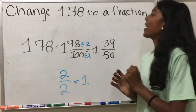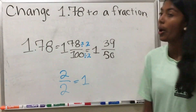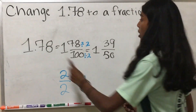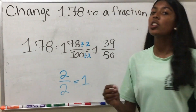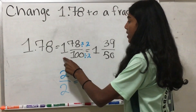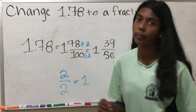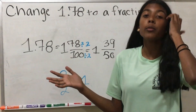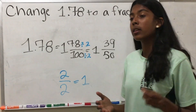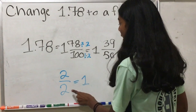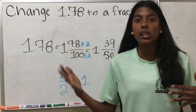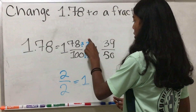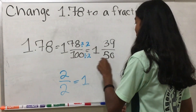Our last problem: change 1.78 to a fraction. We have 1.78 and, like we did before, we count how many numbers are to the right of the decimal point — there are 2 — meaning there are going to be two zeros after the 1 in the denominator. So we write this as 1 and 78 over 100. Now, something we notice is that 78 and 100 are both divisible by 2, so we simplify by dividing both by 2. 78 divided by 2 is 39, and 100 divided by 2 is 50. So the answer is 1 and 39 over 50.